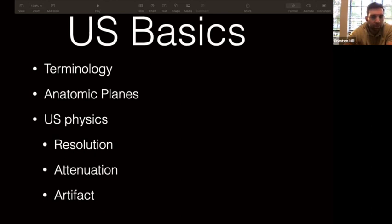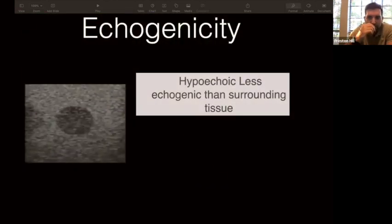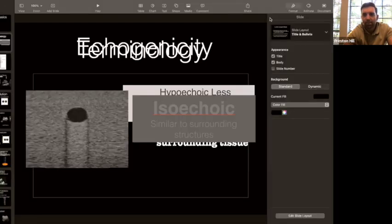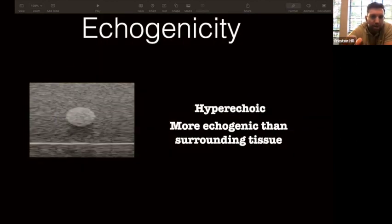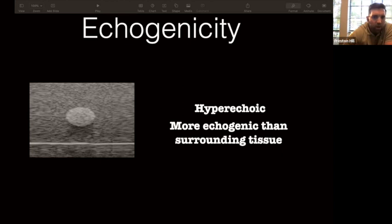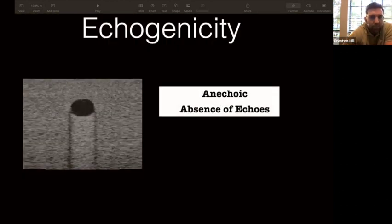If you have questions, feel free to bring them up. Terminology: you'll hear a lot of people talk about echogenicity. Echogenicity is the color — it's like the black-white scale. So you'll hear people say hyperechoic, anechoic, isoechoic. Hyperechoic means there's more echogenicity than the surrounding tissue — it appears white on the image — while the surrounding structure is hypoechoic compared to that spot.